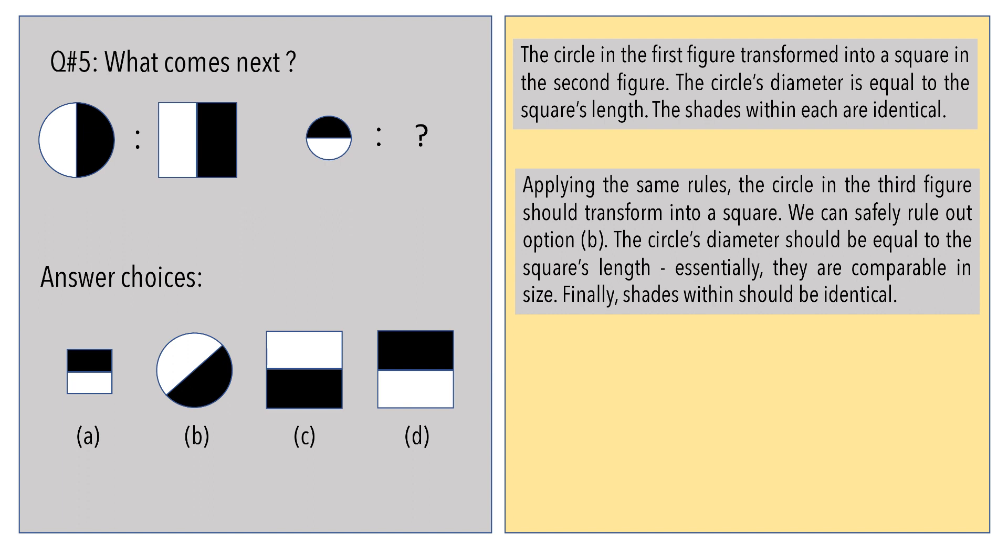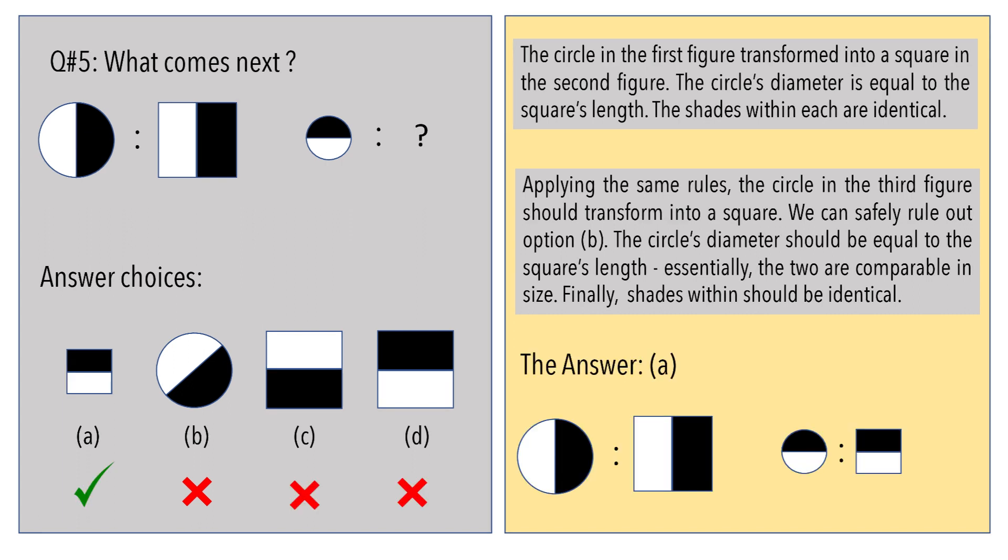Applying the same rules, the circle in the third figure should transform into a square. With this, we can safely rule out option B. The circle's diameter should be equal to the square's length. Essentially, the two shapes should be comparable in size. This condition rules out options C and D. Easy. The correct answer is option A.